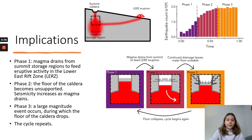This cartoon shows the proposed mechanism for variations in seismicity associated with collapse events at the caldera. As magma drains from shallow storage regions to feed eruptive activity in the Lower East Rift Zone, the floor of the caldera becomes unsupported. The stress transfer from the caldera floor to the surrounding rocks in the second phase leads to a seismicity increase which follows the Gutenberg-Richter Law. The seismicity then culminates in a large magnitude event during which the floor of the caldera drops, and the cycle repeats. The caldera system grows from subcritical in Phase 1, to critical in Phase 2, to supercritical in Phase 3.